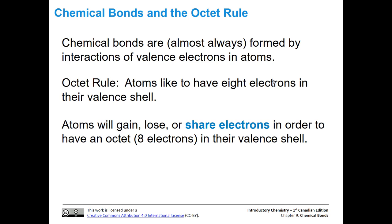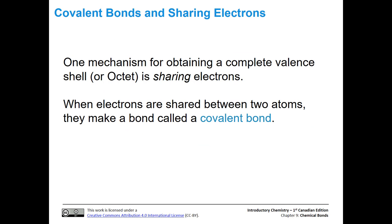Atoms will gain electrons, lose electrons, or in particular for this video, share electrons in order to have an octet. One mechanism for obtaining a complete valence shell or an octet is by sharing electrons. When electrons are shared between two atoms, they make a bond called a covalent bond.